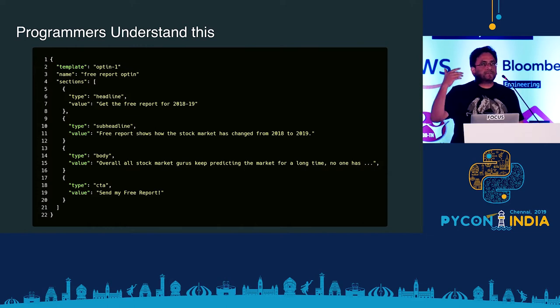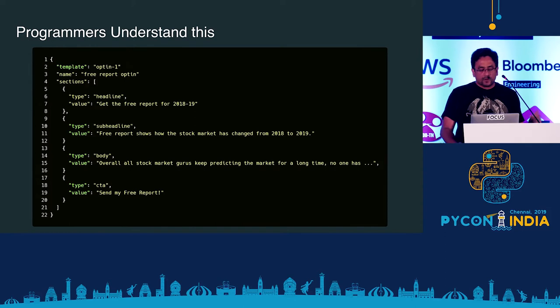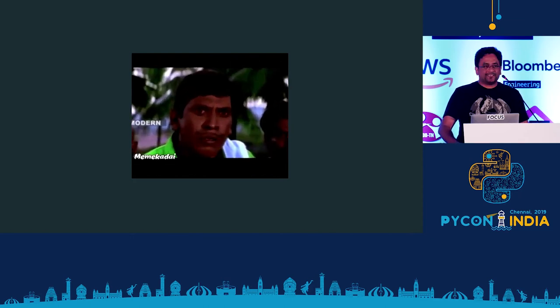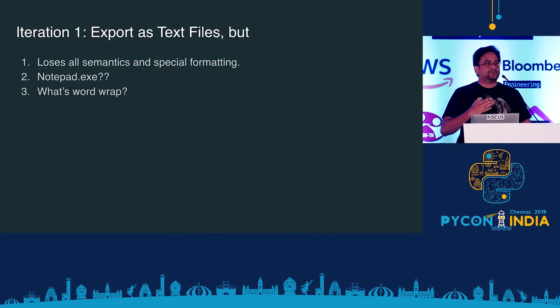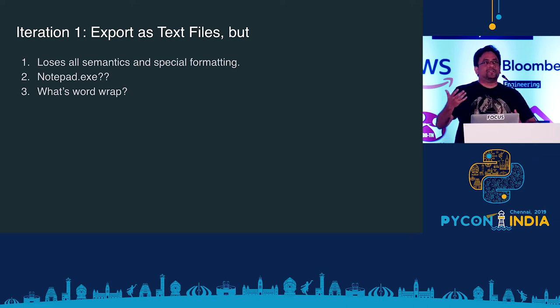There are paragraphs, call to actions, and so on. But if you show this JSON to a marketing guy, this is going to be the reaction he will show. So naturally, you need to create a normal text file which a normal human can understand.